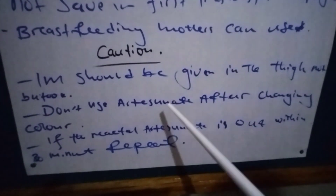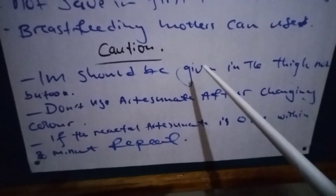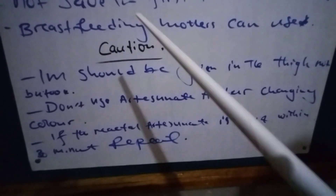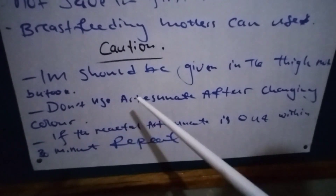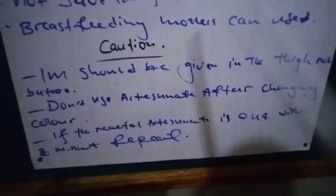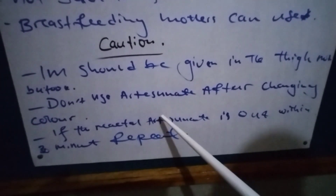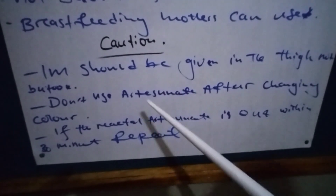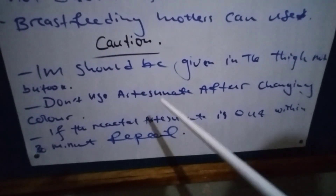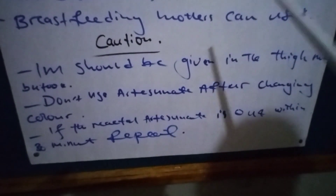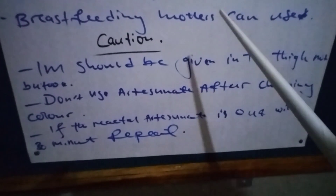Do not use Artesunate after it has changed colour. If Artesunate has been diluted and has stayed for six hours, you are not supposed to use it because it has already changed colour. Also, if rectal Artesunate comes out within 30 minutes of insertion, you have to repeat the dose.